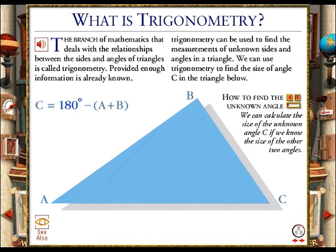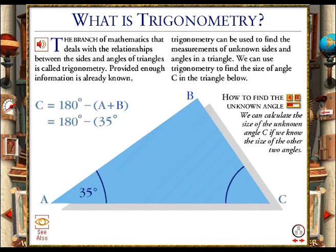We know that the sum of the angles in any triangle is 180 degrees. It is fairly easy to figure out the size of the missing angle, C, in a triangle, provided we know the size of the other two angles. If we add together angle A, which is 35 degrees, and angle B, which is 90 degrees, we get a total of 125 degrees. All we have to do to find angle C is to take 125 degrees away from 180 degrees. This tells us that angle C must be 55 degrees.